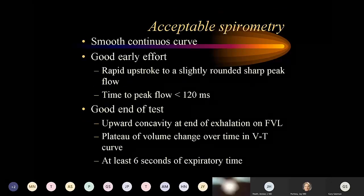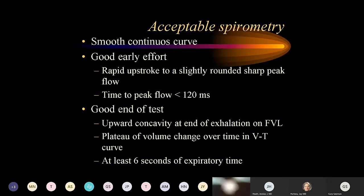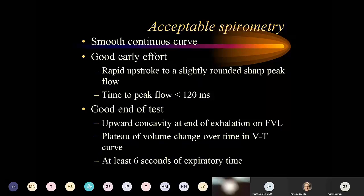Acceptable spirometry requires a smooth continuous curve with a good early effort, a rapid upstroke to a slightly rounded sharp peak, and time to peak flow less than 120 milliseconds. We want upward concavity at the end of exhalation on the flow volume loop, a plateau on the volume-time curve, and at least six seconds of expiratory time. If the patient doesn't adequately exhale, you could misdiagnose a restrictive disorder by underestimating the forced vital capacity.